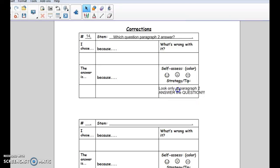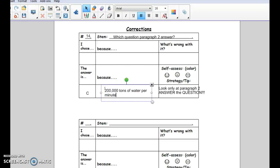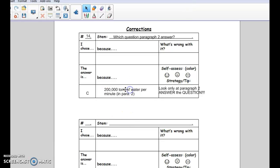Okay, so you need to fill in what you chose, why you chose it, what is wrong with what you chose. The correct answer was C because it says 200,000 tons of water per minute. And that was in paragraph two. That's it.